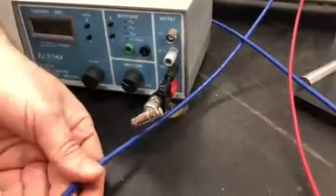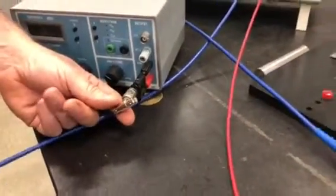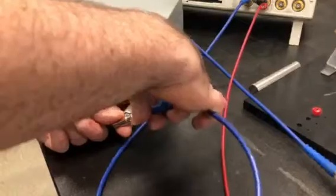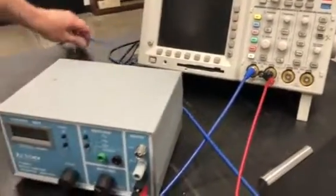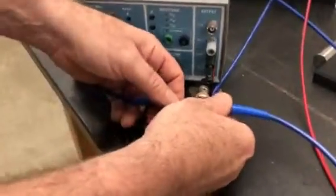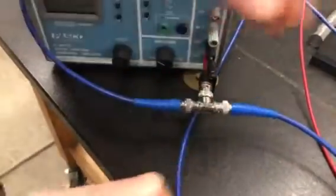I'm going to take one output of the T and I'm going to connect that to channel one of an oscilloscope. I'm going to take the other output of the T and I'm going to connect that to my series LC circuit.